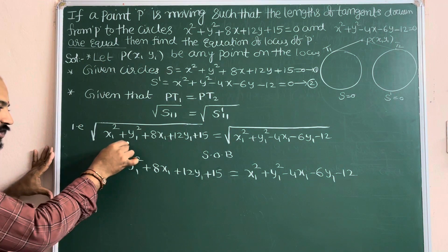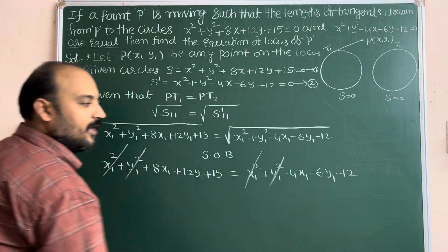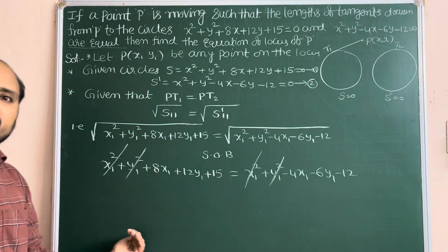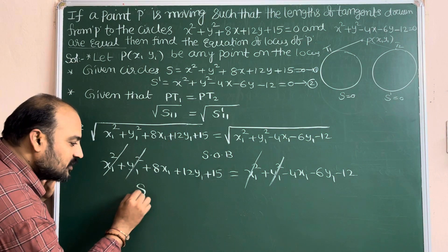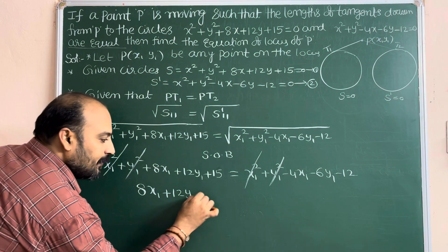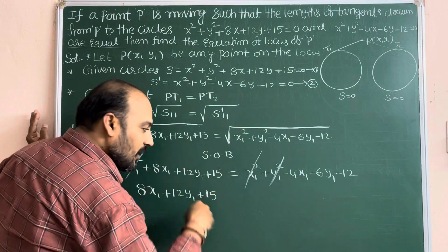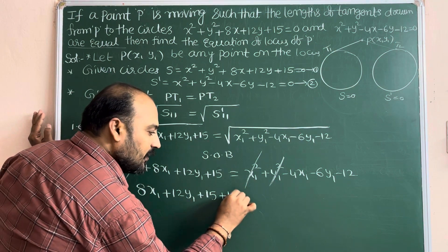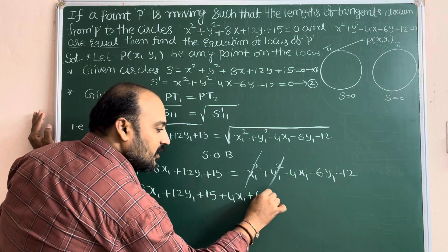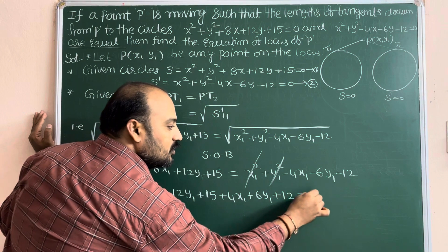Cancel x₁² and y₁² from both sides. Bringing all terms to the left side: 8x₁ + 12y₁ + 15 + 4x₁ + 6y₁ + 12 = 0.